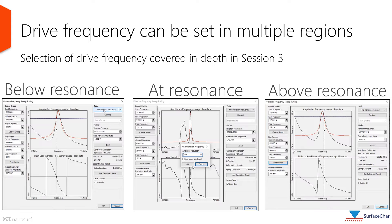Shown here are three ways drive frequency can be set: below, at, or above the resonance. The reason drive frequency is set below or above the resonance is to ensure a specific type of interaction regime between the surface and the tip, which will be discussed in detail in session 3.